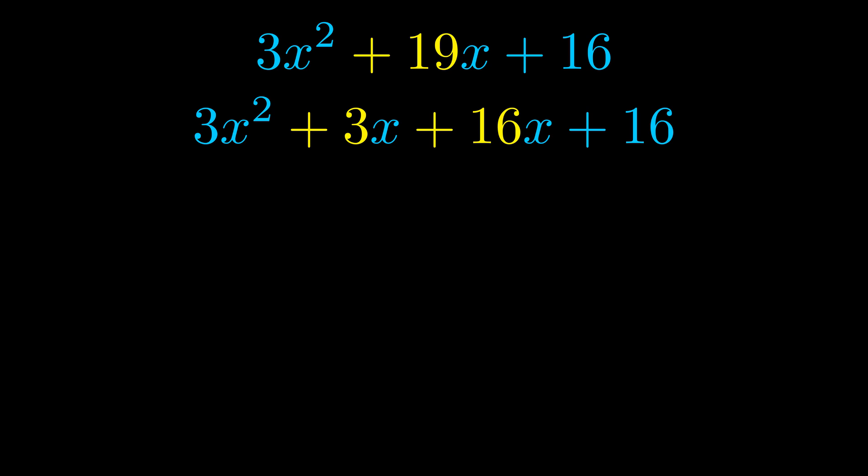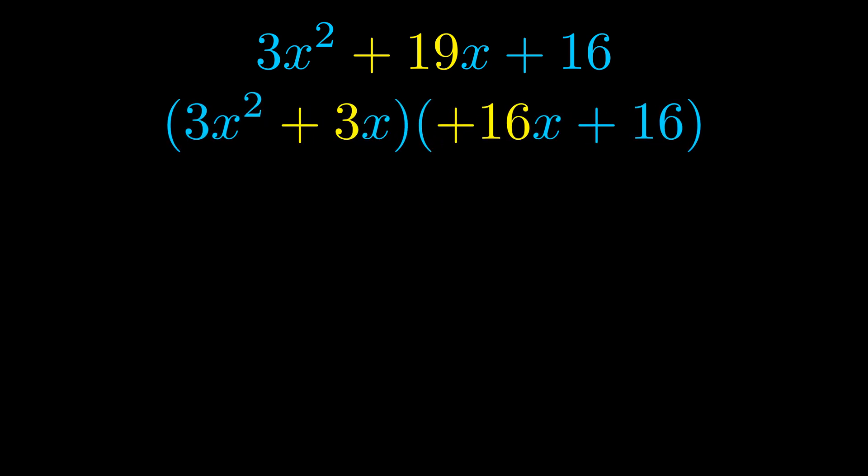Once we've done this, we go ahead and we put parentheses around the first term and the last term. And we do that so that we can take the greatest common factor out of both terms. We can see the greatest common factor is now outside in green. Notice also how what remains inside of the parentheses is the same in both cases.